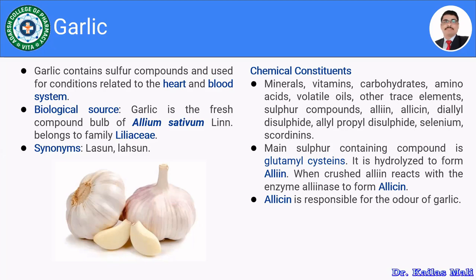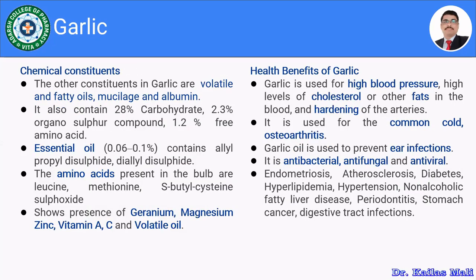Garlic comprises sulphur compounds, the main one being glutamyl cysteine. Glutamyl cysteine hydrolyzes to produce alliin. When crushed, alliin reacts with the enzyme alliinase to form allicin. Allicin is responsible for the odor of garlic. Other constituents present in garlic include volatile oil, fatty acids, mucilage, and albumin.